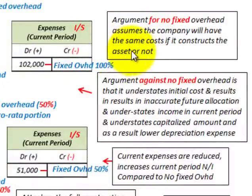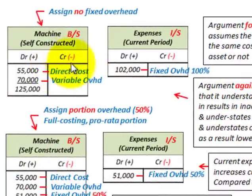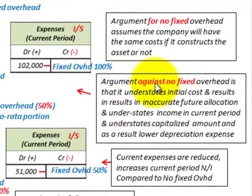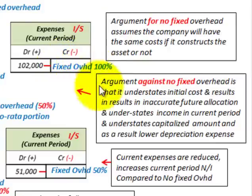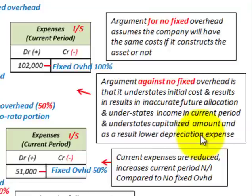The argument for no fixed overhead is that it assumes the company will have the same cost whether it constructs the asset or not. The argument against no fixed overhead is that it understates the initial cost of the machine and results in inaccurate future allocations for depreciation. It also understates income in the current period because we recognize all fixed overhead as expenses, and understates the capitalized amount of the asset, leading to lower depreciation expenses in the future.